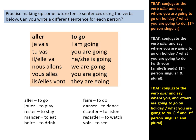Now you can practise making up some sentences using the verbs below. Can you come up with a different sentence for each person? For example, je vais aller au cinéma, or tu vas faire de l'équitation, or il va manger au restaurant. See what you can come up with. Pause the video and try to write six different sentences. Learn the verb aller — that's the key.